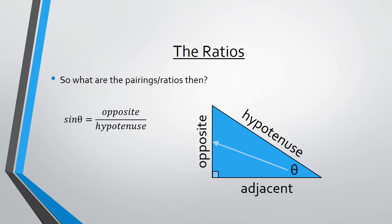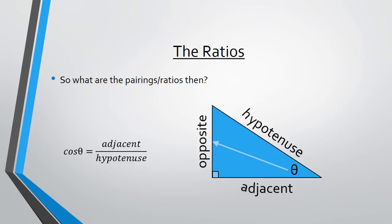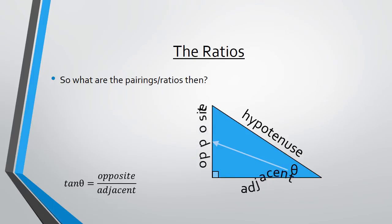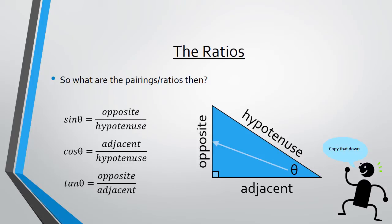Sine, or the sine ratio, is opposite over hypotenuse. Cos is adjacent over hypotenuse. And lastly we have tan, which is opposite over adjacent. Copy that down.